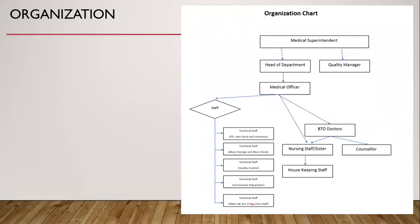If the blood bank is associated with a hospital, then the medical superintendent is the authority, and under the medical superintendent we have the head of department and quality manager. If the blood bank is standalone, then we have a director and the quality manager is directly under the director.